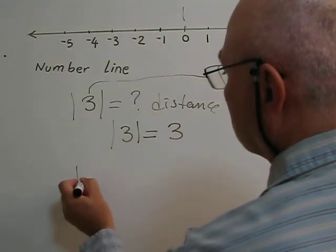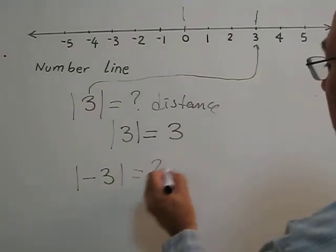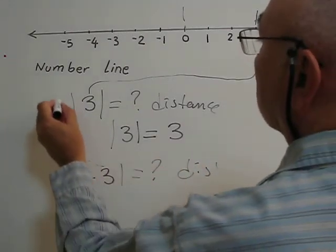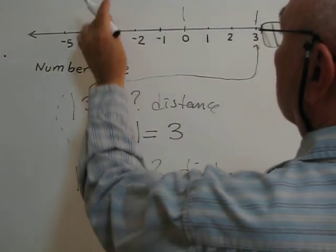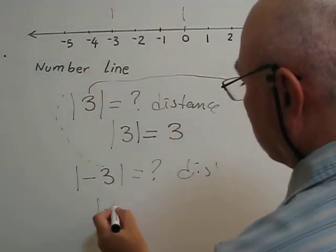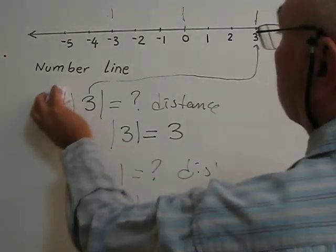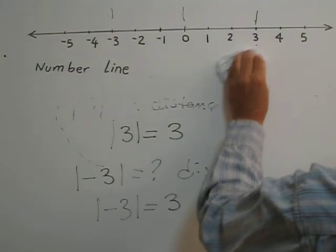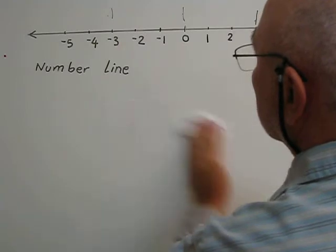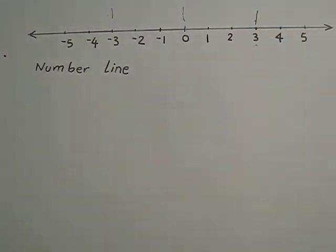How about the absolute value of negative three? Again, it is the distance from the origin. We look for negative three on the number line. The distance between the origin and negative three is three. So the absolute value of negative three is also three. Absolute value is always positive because this is a distance — not a vector quantity, but a scalar quantity.